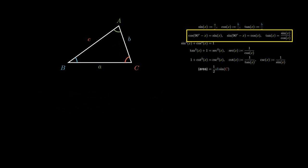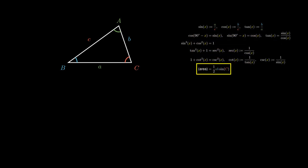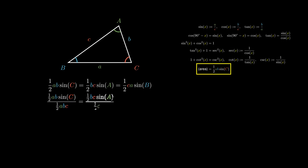If we considered the area of this triangle using sides B and C, the area formula would equal half BC sine A. If instead we use the sides C and A, the area formula equals half CA sine B. This allows us to divide by half ABC on all sides, leaving us with the sine rule, also known as the law of sines.